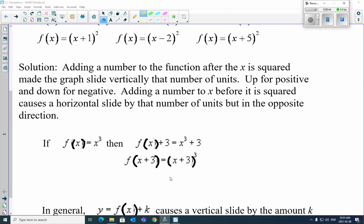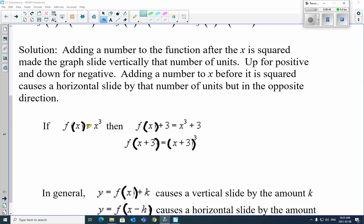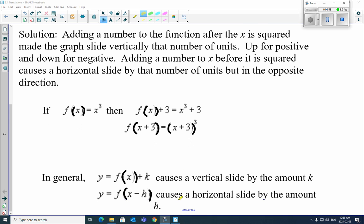So for instance, we have f of x equals x cubed. Well, the same thing is going to happen. If it's a plus 3 on the outside, it's going to shift the whole thing up 3. If it's inside, it's going to shift it negative 3, so it's going to shift it to the left. So vertical slide is on the outside, horizontal slide is on the inside. That's the same thing from what we did in grade 11. That doesn't change.